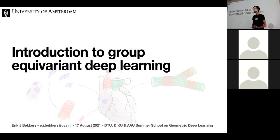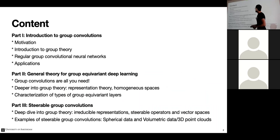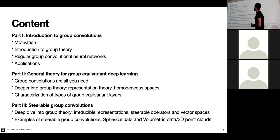The purpose of these three-hour sessions is to get you familiar with the mathematical concepts behind group equivariant deep learning, with plenty of examples of how this translates to deep learning architectures. The structure has three parts: first, an introduction to group convolutions — motivation, basics of group theory, how to build them, and applications. This part will be a promotional talk for group convolutions.